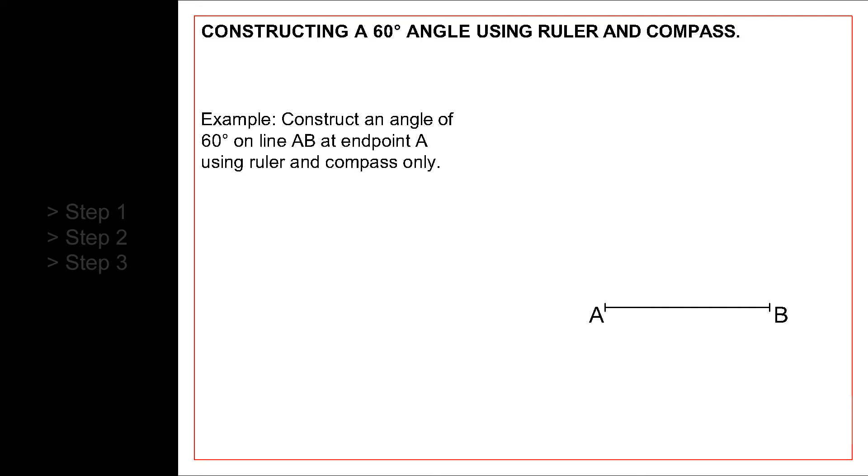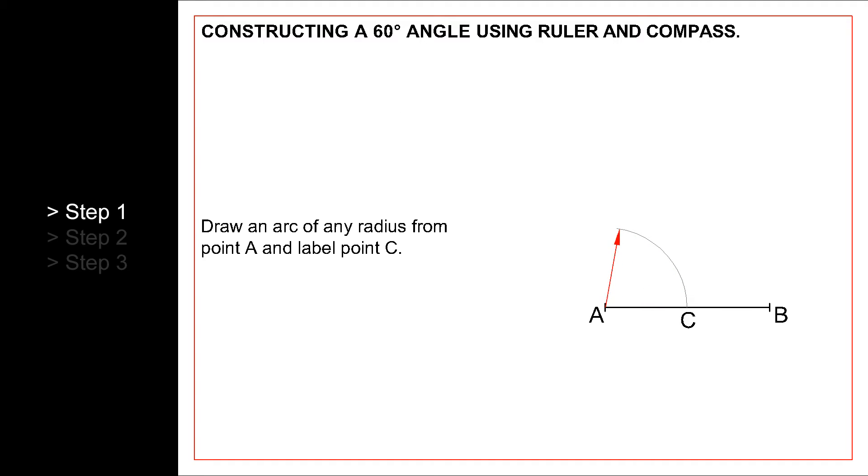Let's start. First, we draw an arc from endpoint A as shown. This arc can have any radius. Label the point of intersection of the arc and the line as point C.